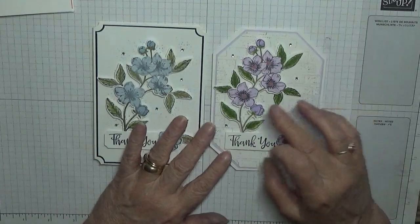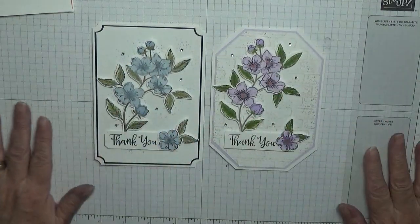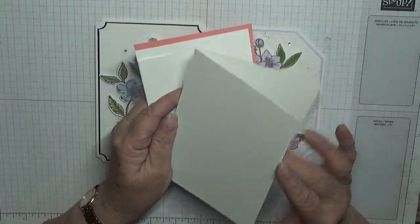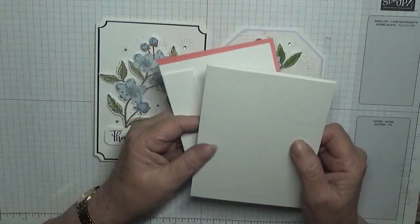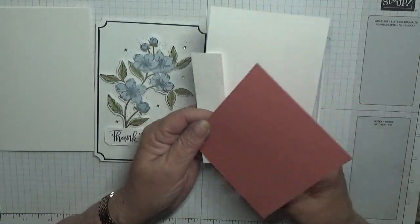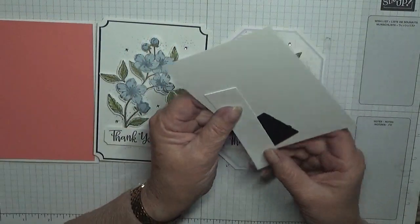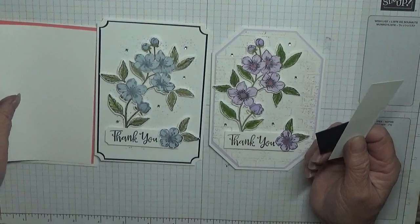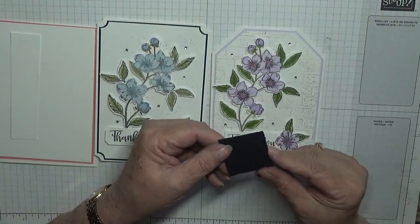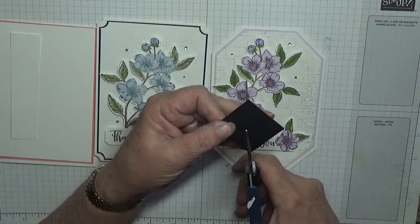I'll show you how I've done the corners. I've come up with a new way of doing it. To do this, I've got a card base of eight and a quarter by five and seven eighths, scored at four and one eighth, folded in half and burnished. A piece of Flirty Flamingo at five and five eighths by three and seven eighths, a piece of white at five and a half by three and three quarters, a scrap of white for the sentiment, and a one and a half inch square.